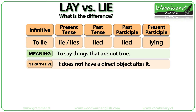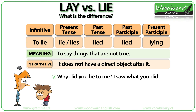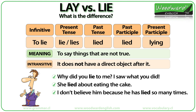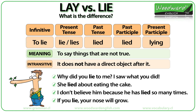LIE also has another meaning. Here is the conjugation of the other meaning of the verb TO LIE — notice how it is a little different. LIE can also mean to say things that are not true, or to not tell the truth. Why did you lie to me? I saw what you did. She lied about eating the cake. I don't believe him because he has lied so many times. If you lie, your nose will grow.